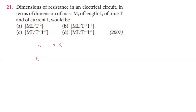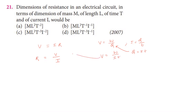Resistance equals potential divided by current. Potential difference is equal to work done to move a unit charge, so potential equals work done divided by charge. Current is amount of charge flow per second, so charge equals current into time. Therefore potential V equals work done W divided by charge, which is current I into time T.